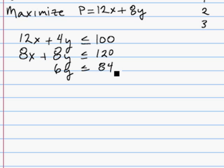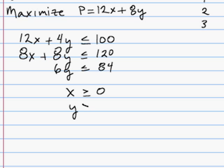One thing not explicitly stated is the non-negativity constraints — that is, we know we're going to produce more than zero, or greater than or equal to zero, Zigs, and we're going to produce at least zero Zags.